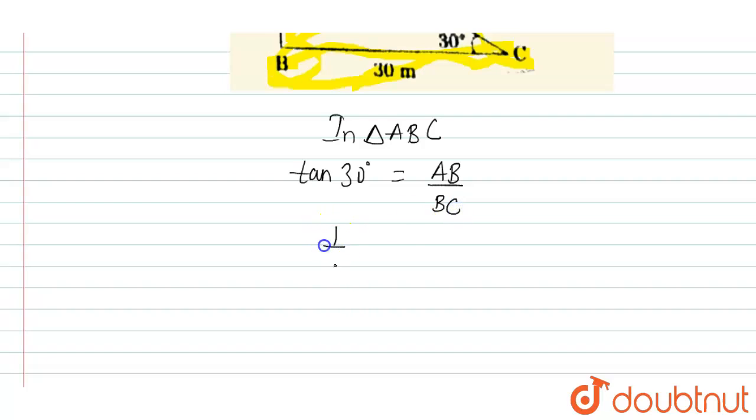Tan 30 is equal to 1 upon root 3 is equal to, let's say A upon 30 meters. So, AB is equal to 30 upon root 3 which is also equal to 10 root 3 meters.